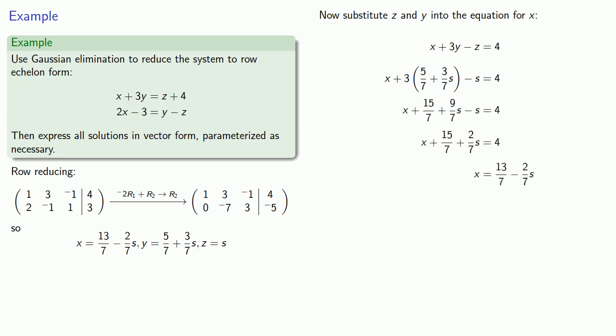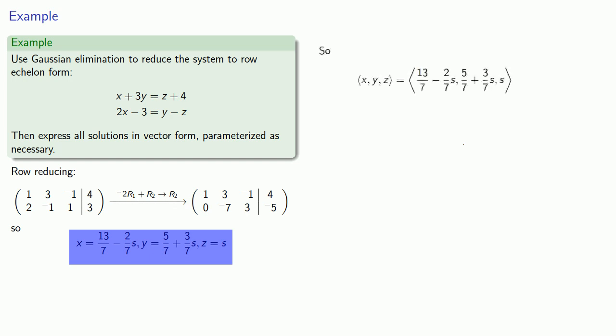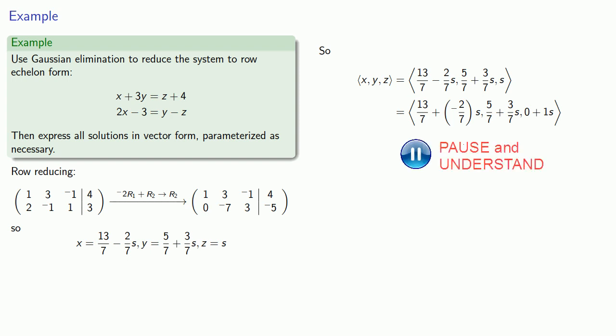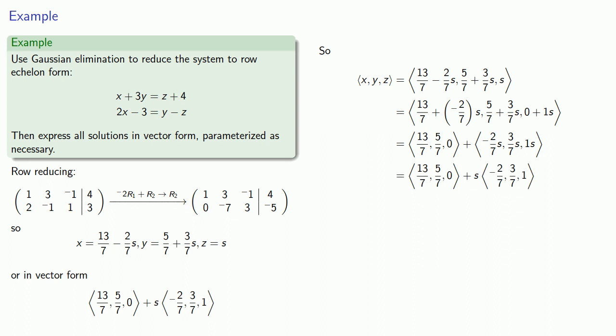Now we can put this solution in vector form. First we'll write our solution x, y, z as a vector. We'll rewrite our components so they all include a constant and an added s term using negative 0 and 1 coefficients as necessary. This allows us to split our vector into two components. The constants form one vector, and the s terms form the other vector. We can remove the s as a scalar multiple of the second vector and write our solutions as a linear combination.